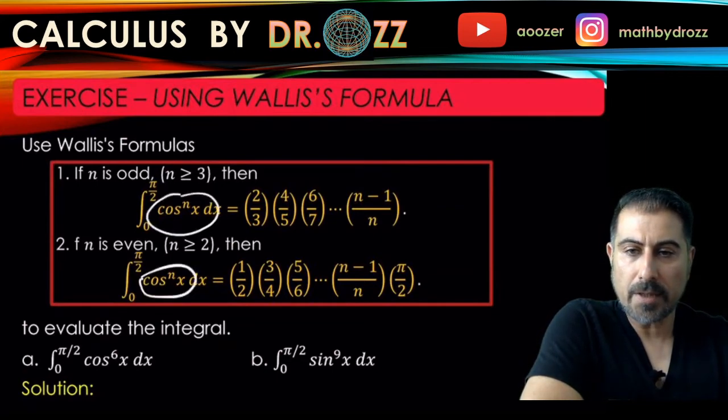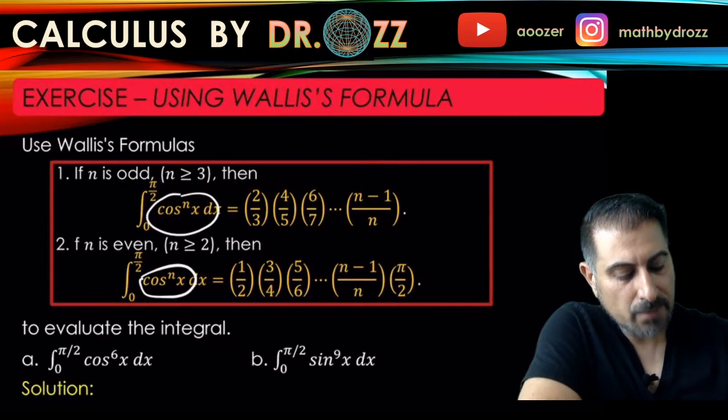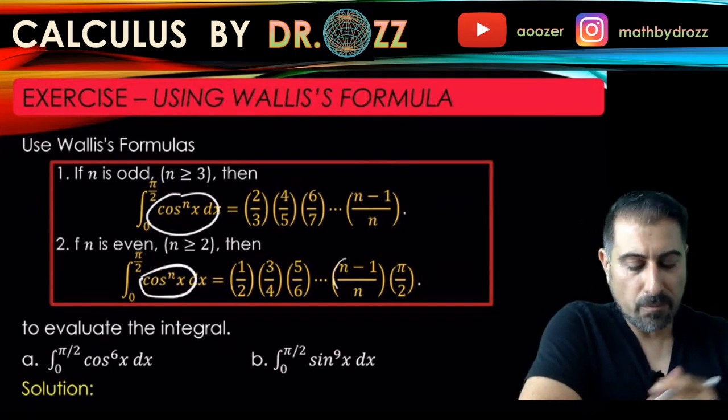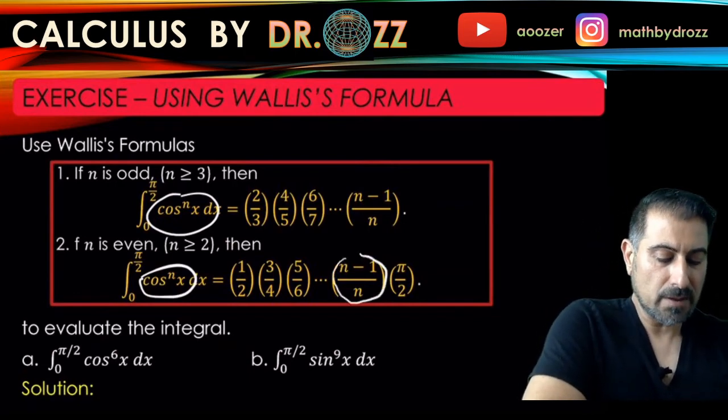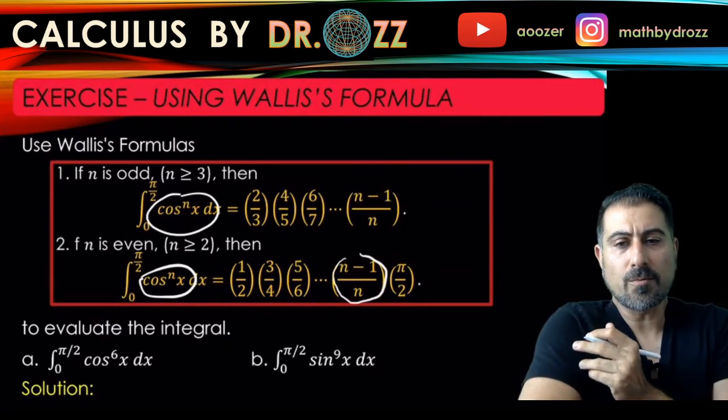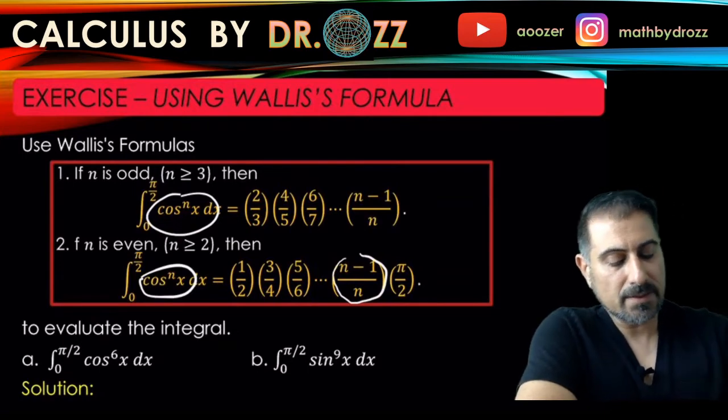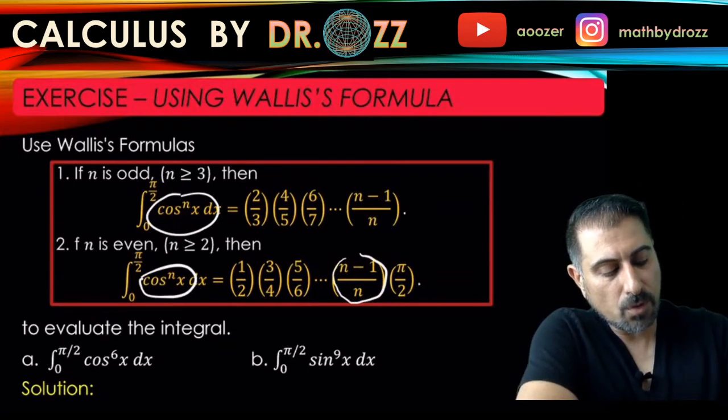So I have in part a, n to be 6, so it is an even number. Let's check what the pattern of the right hand side looks like. You have 1 over 2, 3 over 4, 5 over 6, all the way to n minus 1 over n, pi over 2. So the question is, where are you going to stop? So when n equals 6, this term becomes 5 over 6.